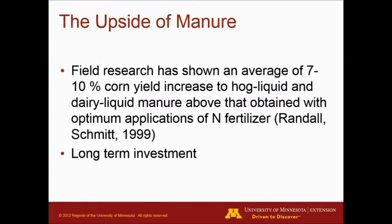There is research done by the University of Minnesota — Dr. Giles Randall and Dr. Mike Schmidt — where they show that if you have two fields that have not seen manure recently, and in one field you apply manure, either hog liquid or dairy liquid, and in another field you apply just commercial fertilizer to fulfill crop needs, you will probably see a 7% to 10% yield boost where you apply that manure. That manure is providing, besides nitrogen, phosphorus, and potassium, some organic matter; it helps with soil tilth; it provides secondary nutrients and micronutrients, as well as microorganisms that will help in the soil.